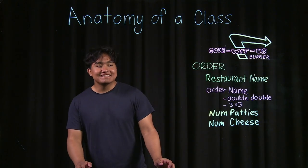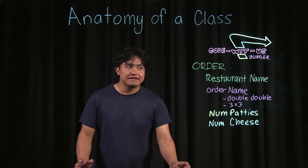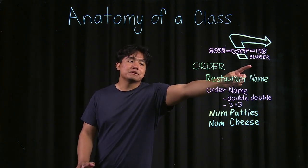So our class is going to consist of our order. It's going to have our restaurant name which should be a class variable because it's always going to be CodeWithUsBurger.